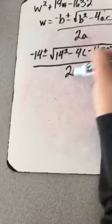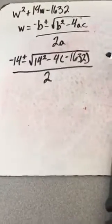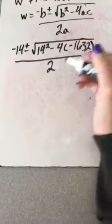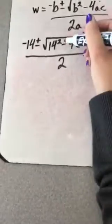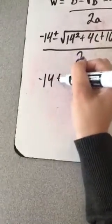And then over 2. So we're gonna solve for this first. When we multiply these out, that's gonna be plus a positive. Alright, so it's negative 14 plus or minus the square root of 14 squared.